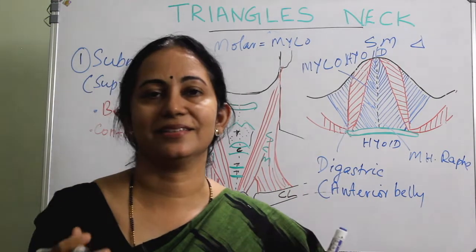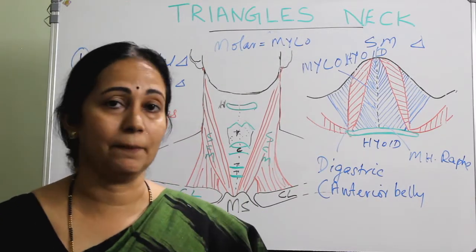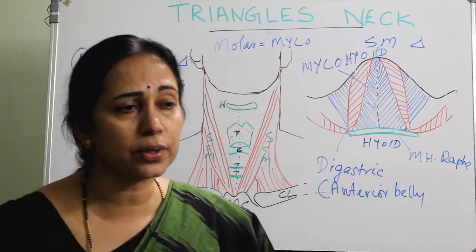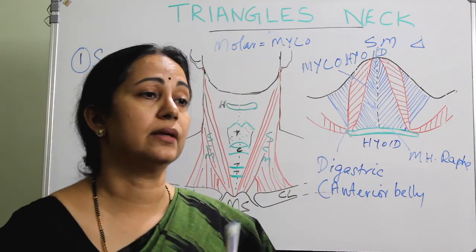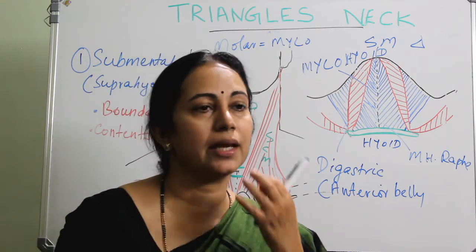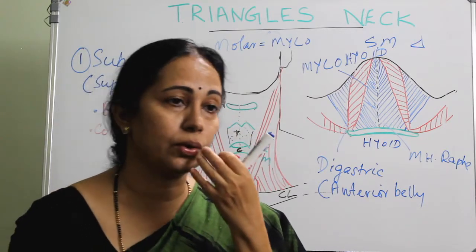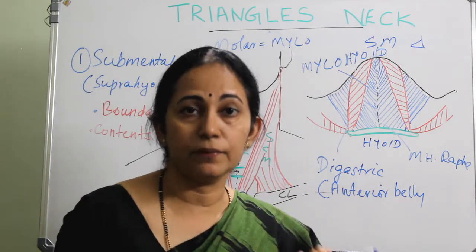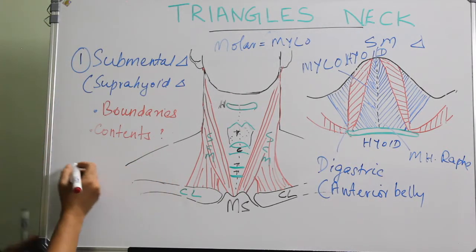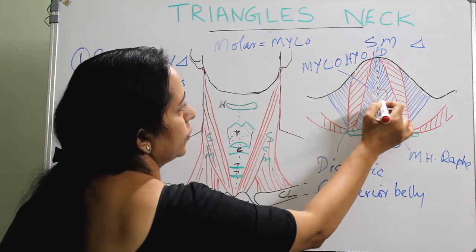All contents are related to the term mylohyoid and also submental. The first content is the submental lymph node. This is very commonly seen clinically — any infections of the oral cavity or the midline of the lip will cause enlargement of the submental lymph node.